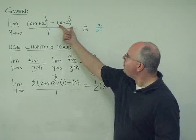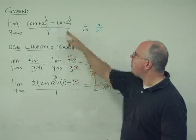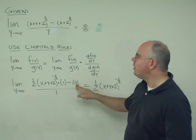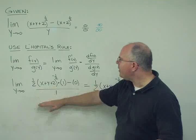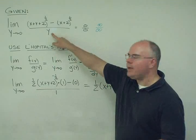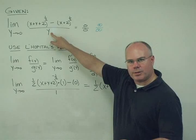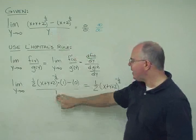And the derivative of this term with respect to y, well, there is no y, so that derivative is just zero. Finally, in the denominator now, we're going to take y and differentiate with respect to y, and that gives us a one.